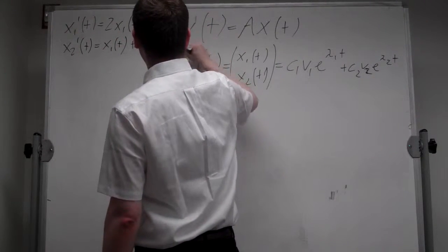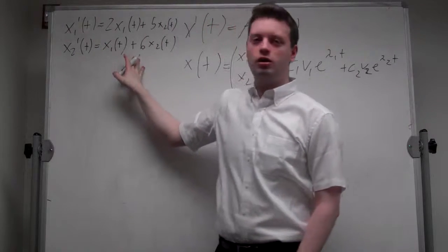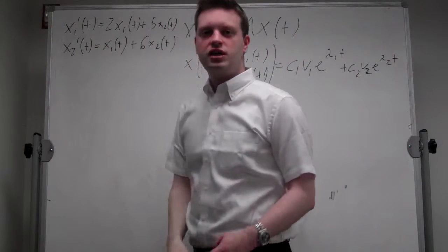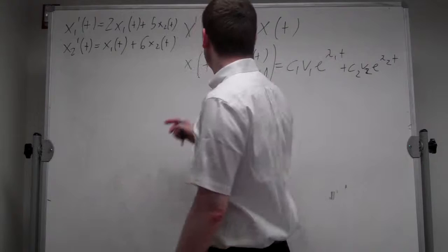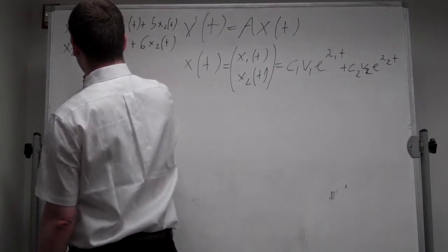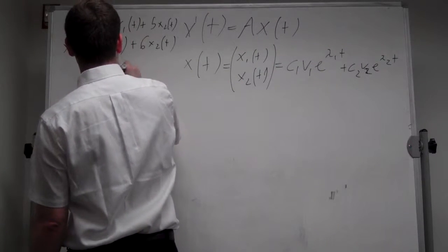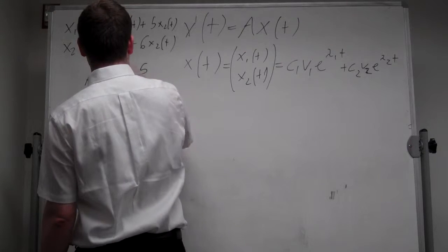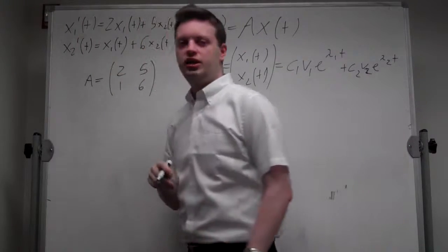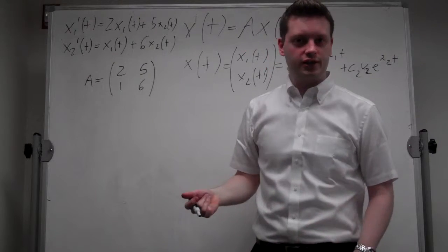Okay, so we have this system here. The associated matrix with that system, matrix A, is equal to 2, 5, 1, 6, and we need to find eigenvalues and eigenvectors of this matrix.